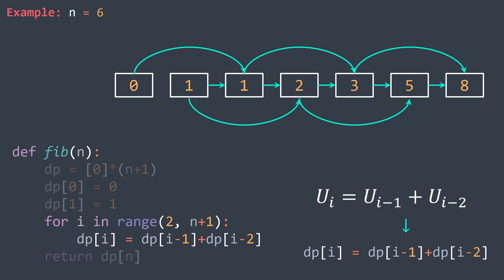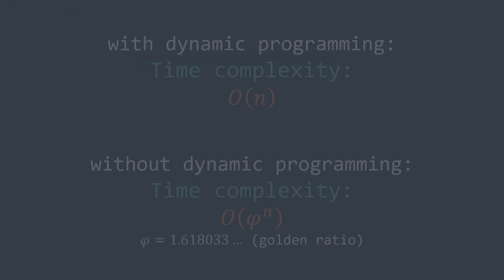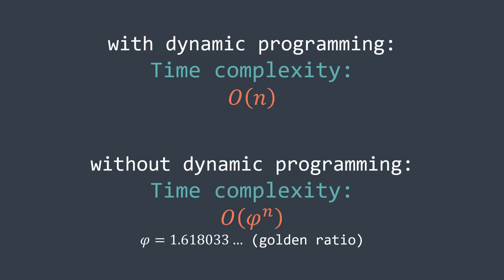The value we're searching for is in the last cell, so we return it. Both of these approaches give an O(n) time complexity thanks to dynamic programming, which is way better than the exponential time complexity of the non-optimized recursive solution.